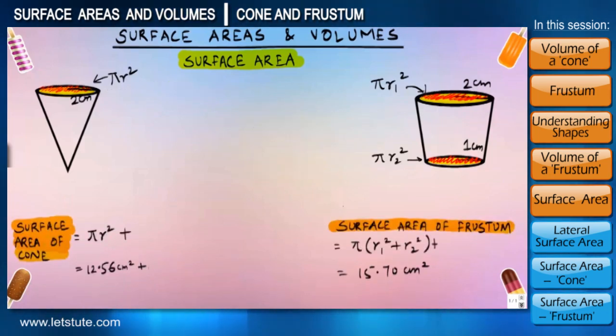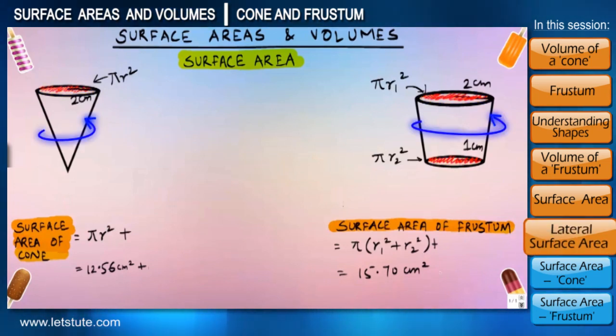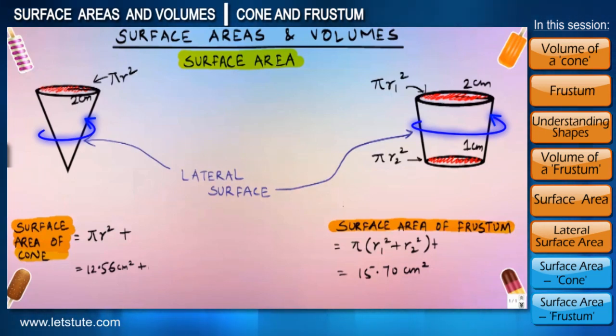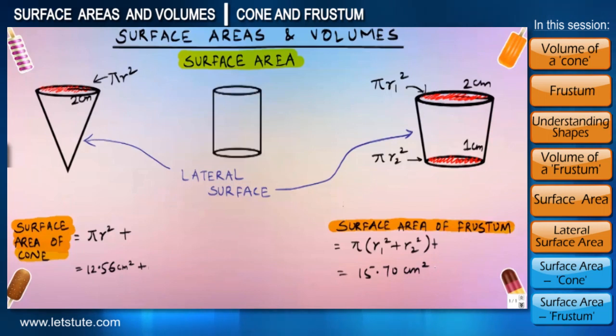Now the only thing left to find is the paper required to cover the side part of these shapes, which is called lateral surfaces. Since the side surface is smooth and curved in case of a cone, frustum, and cylinder, it's also called a curved surface.